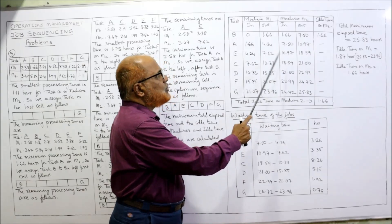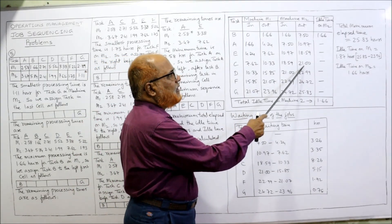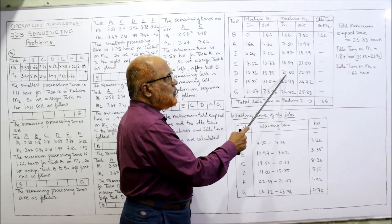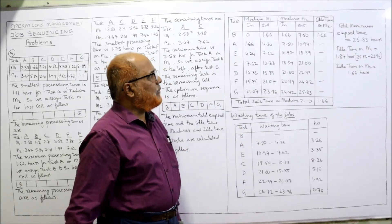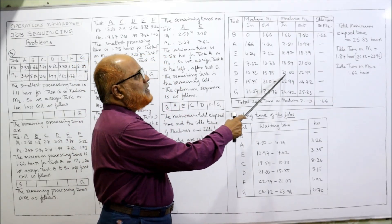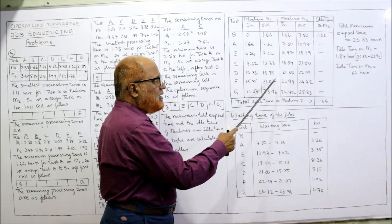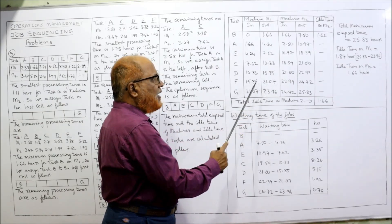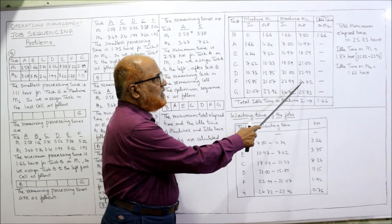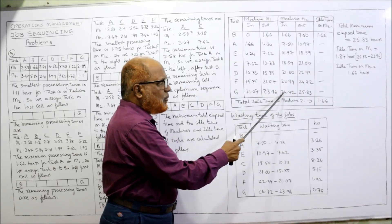Task C on M2 is 2.41, so 18.59 + 2.41 = 21.00. Compare 21.00 and 15.85 — 21 is higher, so D starts at 21. Task D on M2 is 1.99, so 21 + 1.99 = 22.99. Compare 22.99 and 21.07 — 22.99 is higher. Task F on M2 is 1.73, so 22.99 + 1.73 = 24.72. Compare 24.72 and 23.96 — 24.72 is higher.